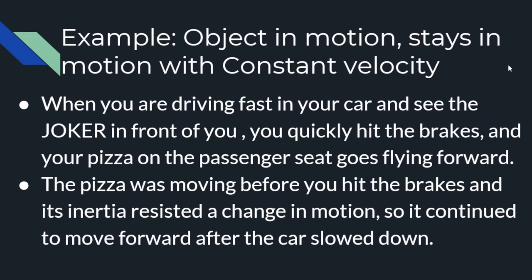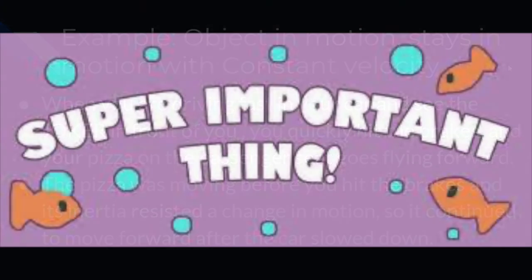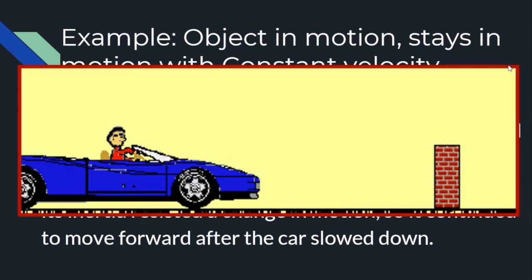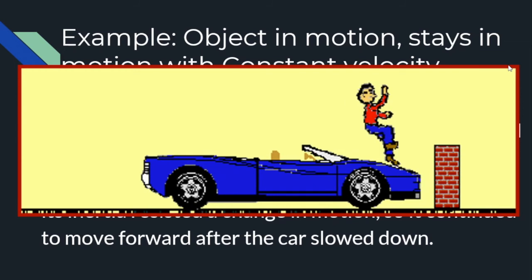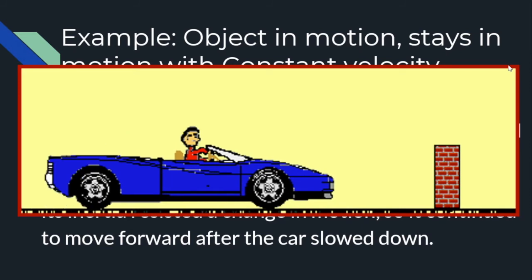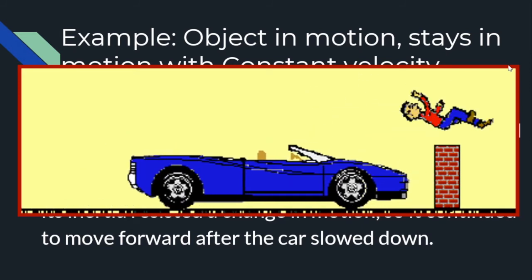The pizza was moving before you hit the brakes because the pizza was in the car, and its inertia resisted a change in motion, so it continued to move forward after that car slowed down. This is one of the main reasons why we need to wear our seatbelts. If we don't have a seatbelt on in a car, we are moving at the same speed that that car is moving, and if our car comes to a stop very quickly because we're in an accident, we are going to fly forward at that same speed. Objects in motion want to stay in motion, so make sure you are always wearing your seatbelt. We can see an example of somebody that's not wearing their seatbelt: they're moving at a constant velocity, they hit some barrier, and they keep moving at that constant velocity.